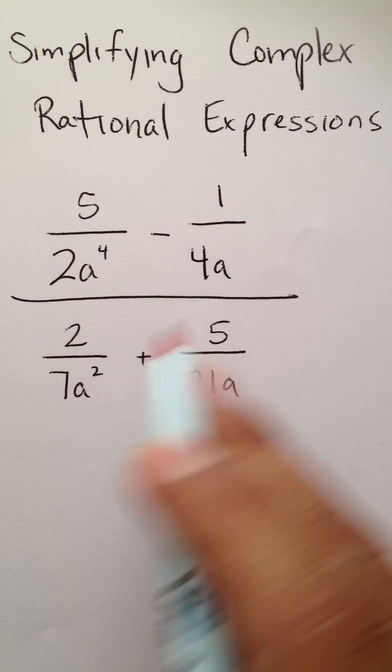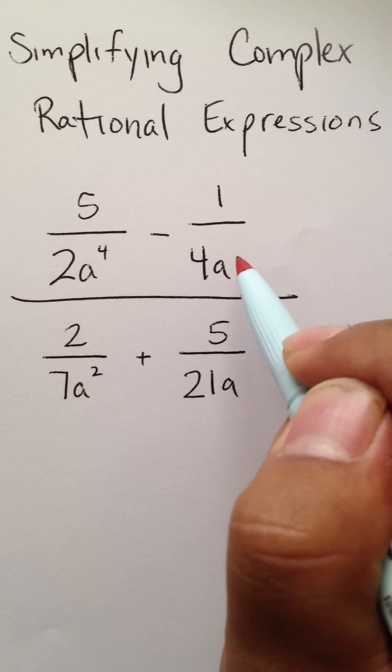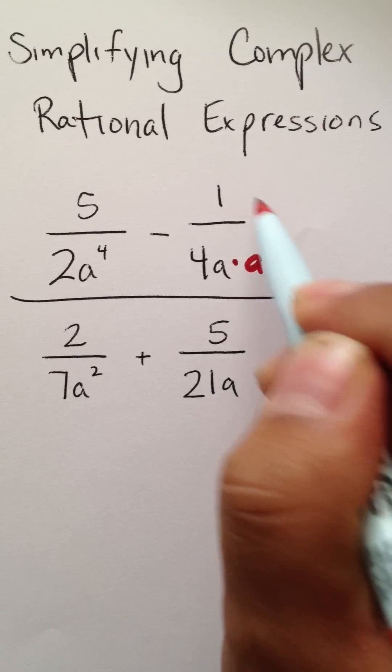Pay attention to your numerators and then pay attention to your denominators. The first thing I'm going to do is multiply this by a to the third power and a to the third power.